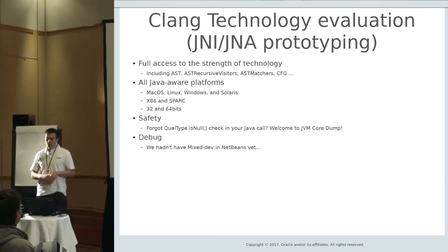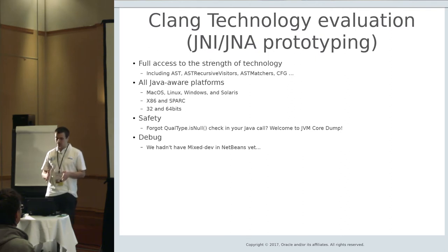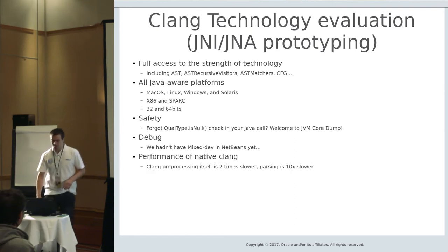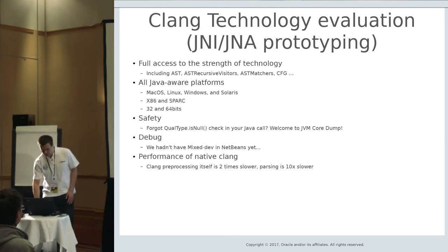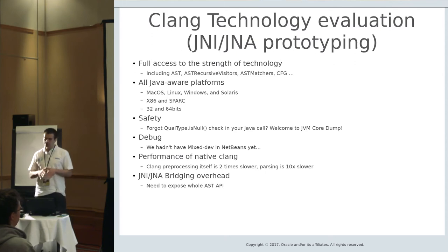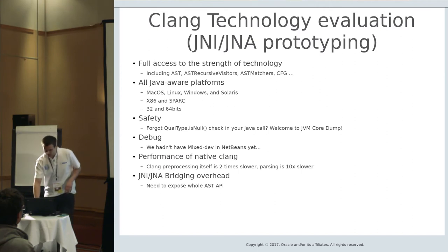Debugability was also an issue for us — we didn't have mixed-debug functionality in NetBeans at that time. In fact, that was the driver why we implemented mixed development support in our IDE. Performance was also an issue because our parser, lexer, etc. were highly optimized, and they could pre-process and parse Clang itself two to even ten times faster than Clang. When interacting with a native library, you have some bridging overhead, and exposing the whole AST from Clang would require a lot of Java wrapper code.